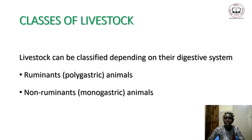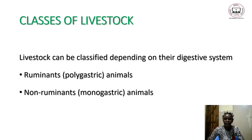Herbivores are animals which feed on grass or plants only. Carnivores are animals which feed on flesh only. Omnivores are animals which feed on flesh as well as plants. In our topic we are going to emphasize or look into details on classes of livestock depending on their digestive system.